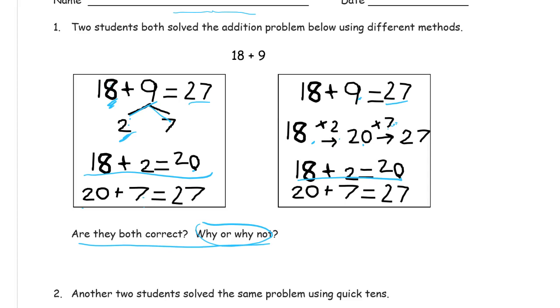They're both correct because 18 plus 9 is 27. Yes, they are both right. They both add 18 plus 2 first and then 20 plus 7. Both are correct.